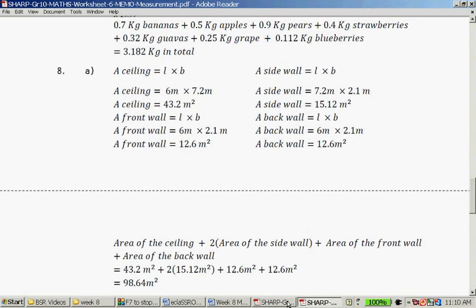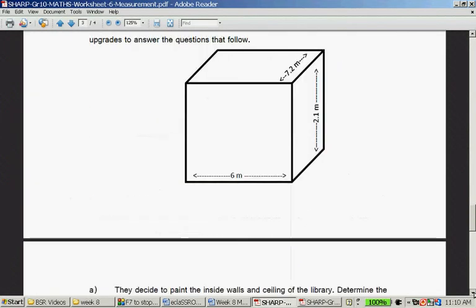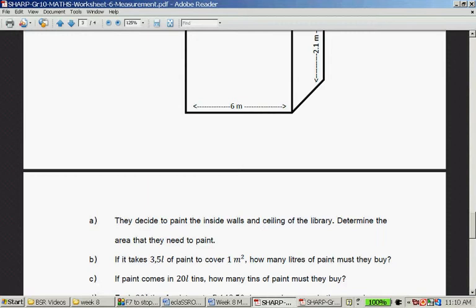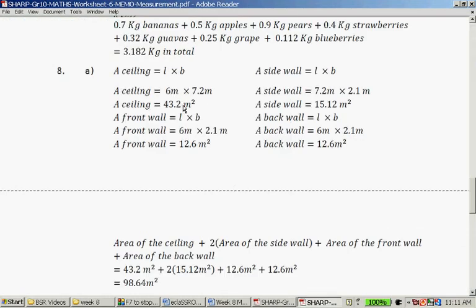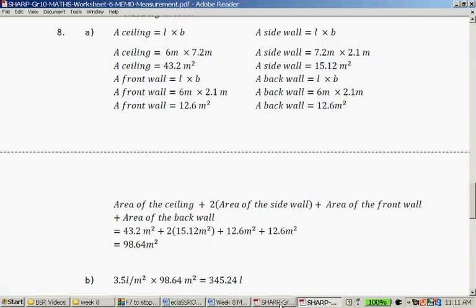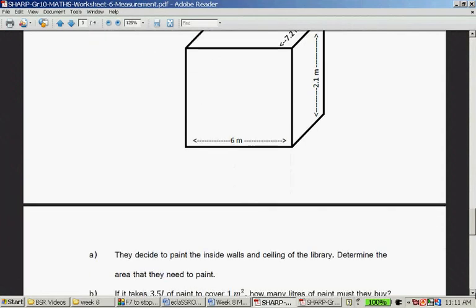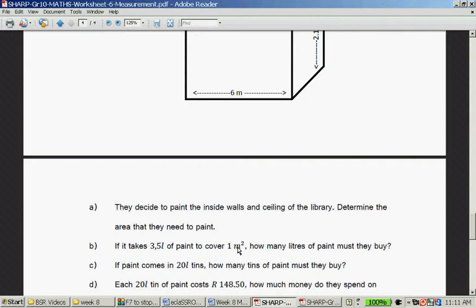The learners of Helpful High, now we're painting the ceilings. They decide to paint the inside wall and the ceiling of the library to determine the area of paint. So what do they have to paint? They have to paint here, here, at the back, at the side, and at the front. So the ceiling is this. So that's the area of the ceiling, that's 6 times 7.2. The front wall is 6 times 2.1. The side wall is 7.2 times 2.1. And the back wall is 6 times 2.1. Or you can say the area of the ceiling plus 2 times the area of the side wall, 2 times the area of the front, the area of the front wall and the back wall. And then altogether, it's 92.64 square meters.